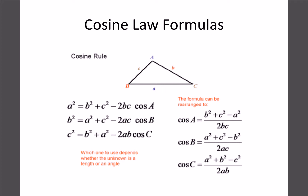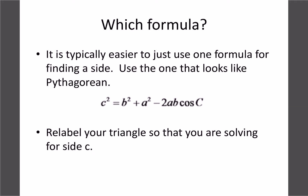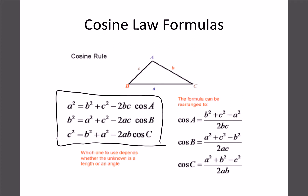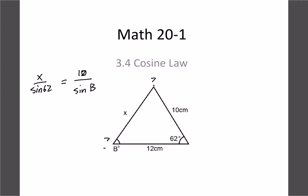With cosine law there are three formula variants depending on which side you're solving for. My advice is to always stick with the c² version: c² = a² + b² − 2ab·cos C. Just relabel your triangle so that the side you're looking for is always called c. The order of a and b doesn't matter since you're just adding them.